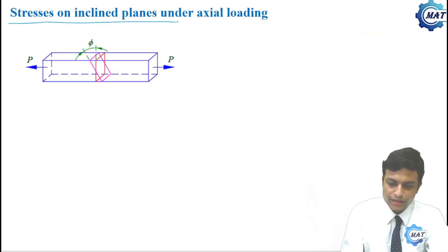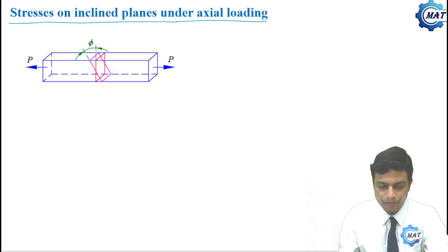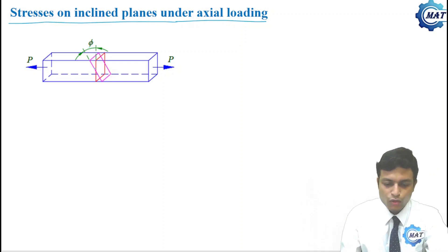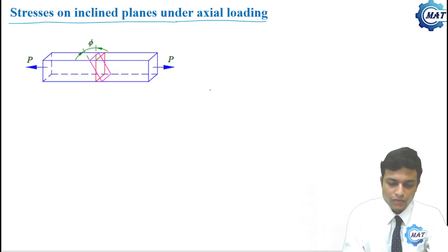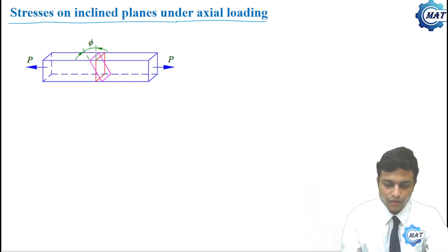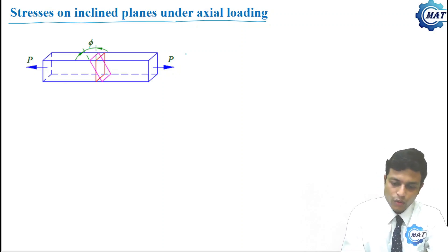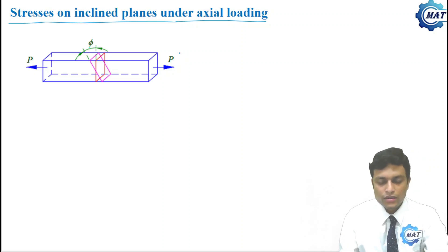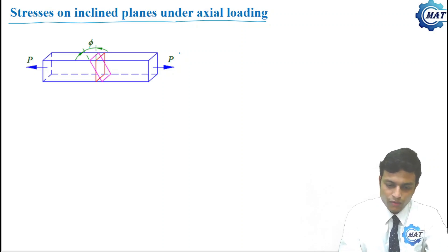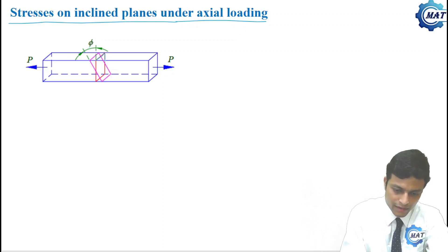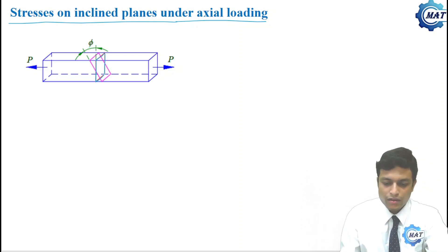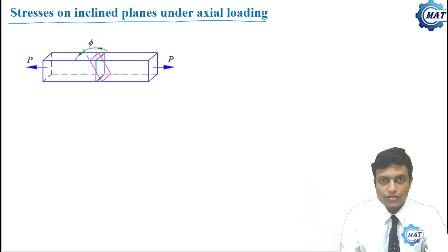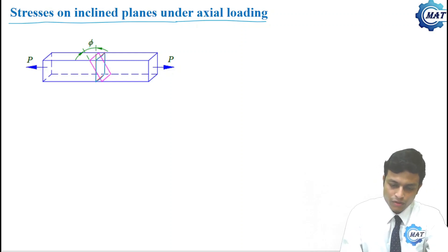Stresses on Inclined Planes under Axial Loading. This is a homogeneous uniform bar — uniform means the cross section is uniform. An axial load P is applied to the bar. On the vertical plane, the normal stress will be P/A and the shear stress will be zero, where A is the cross-sectional area of the bar.